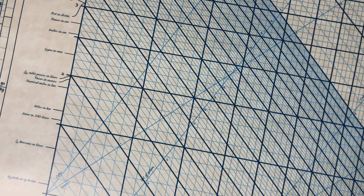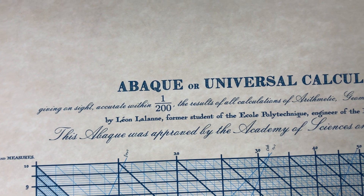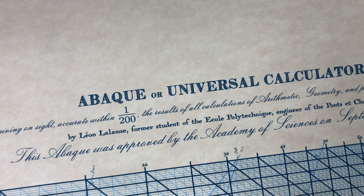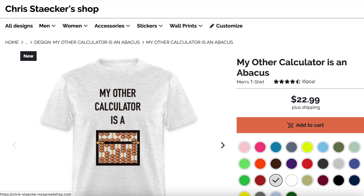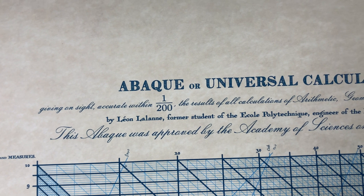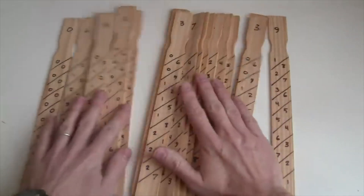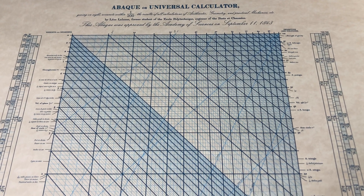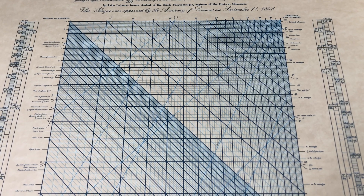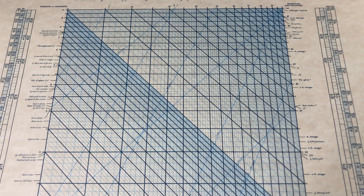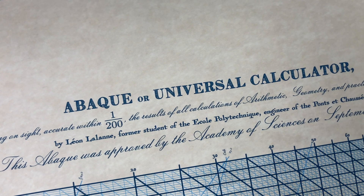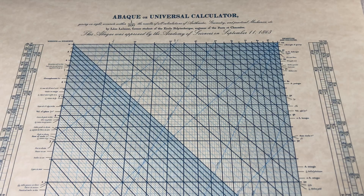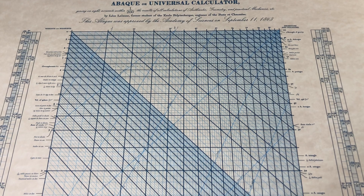He called it the Abac. This is something you see in the very early days of computing instruments. For centuries, the only computing instrument with a name was the Abacus, so when people started inventing other things, they just called them Abacus too. Like, Napier's Bones was sometimes called the Rod Abacus, and Garber's Counting Board was called an Abacus — they just didn't have any other words for computing instruments. But Lalanne was very ambitious in his concept, calling it the Universal Calculator — meaning it can calculate a random assortment of specific tricks and formulas encoded as special lines on the chart.